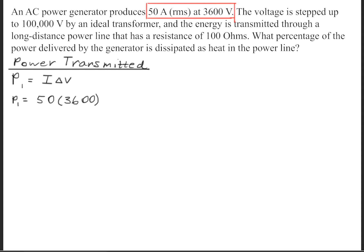To begin this question, we need to first find the power transmitted. To find power, we know that the power is equal to the current times the voltage. So we'll simply take 50 amps and multiply that by 3600 volts. That'll give us a power of 180,000 watts.